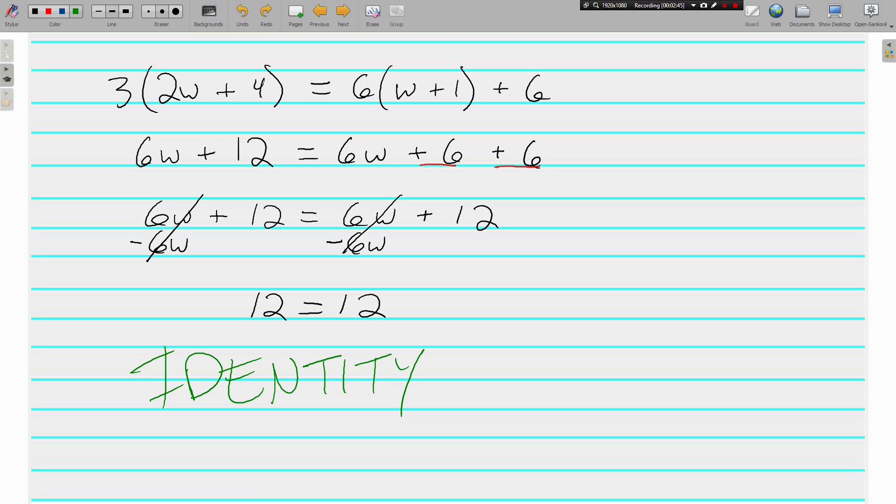And what this means is you could substitute any number in for w and it would make a true statement. If we went back up here, it doesn't matter what number we put in for w, the equation is going to balance. The left side is going to equal the right. We could put in 100, negative 3.2, we could put in 4 fifths. Infinitely many solutions. We could plug in anything for w and get a true statement. This is called an identity.